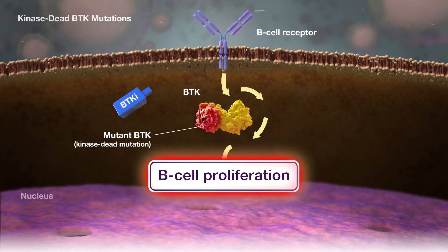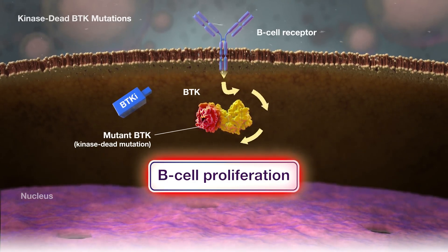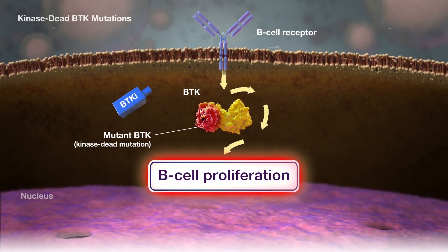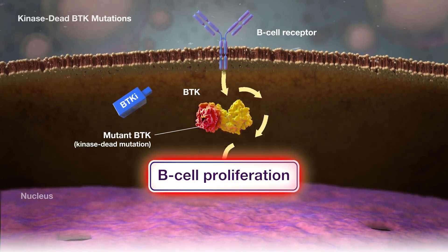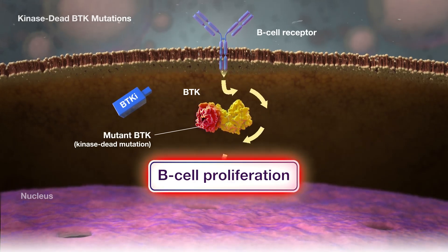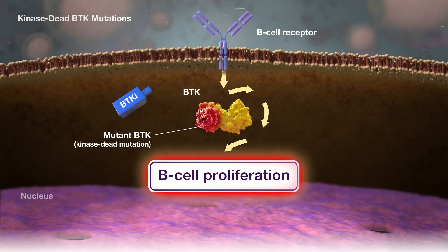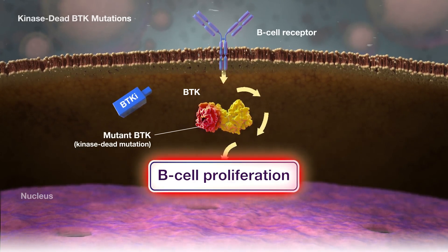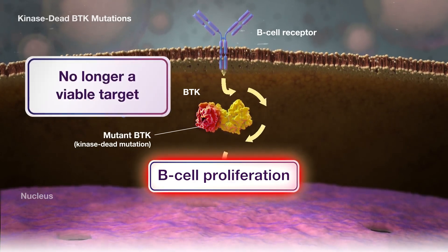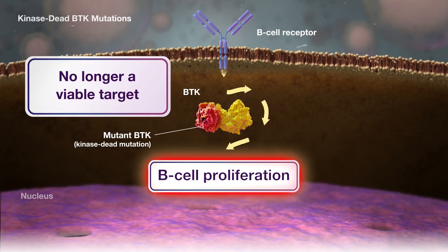In this bypassing mechanism, other kinases are recruited as an alternative pathway, allowing B-cell receptor signaling to continue without BTK activity. Once B-cell receptor signaling bypasses BTK, it may no longer be a viable target for controlling B-cell proliferation.